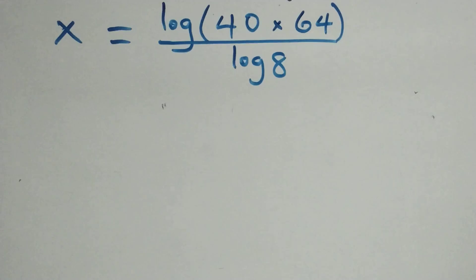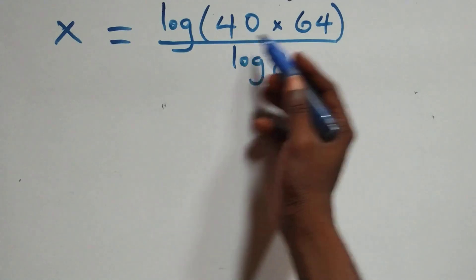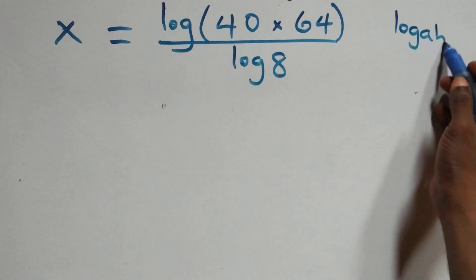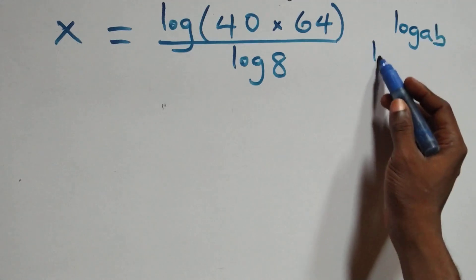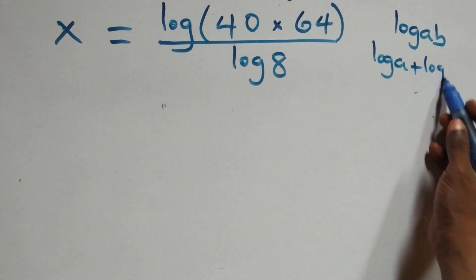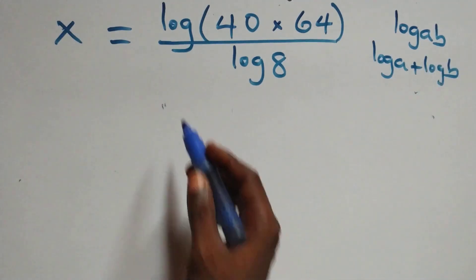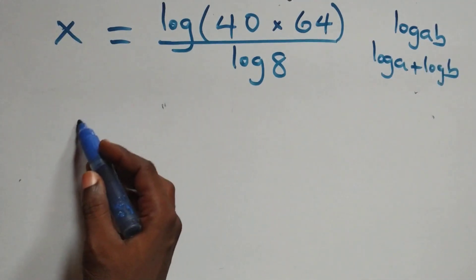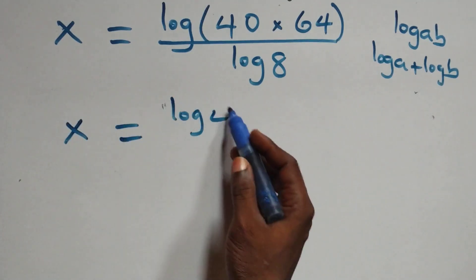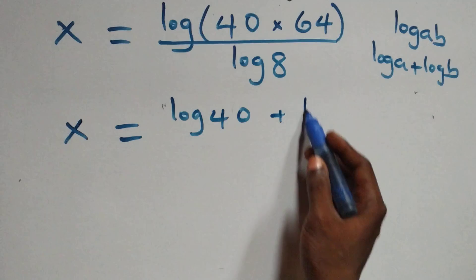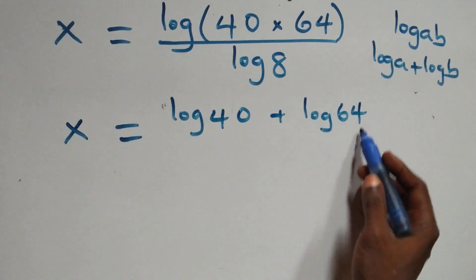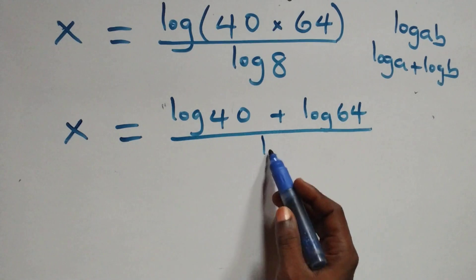This follows from the log product rule: when we have log of a times b, that is the same thing as log a plus log b. So all we have here becomes x equals log 40 plus log 64 over log 8.